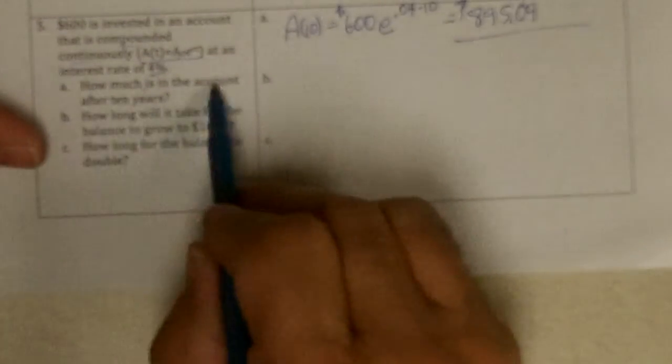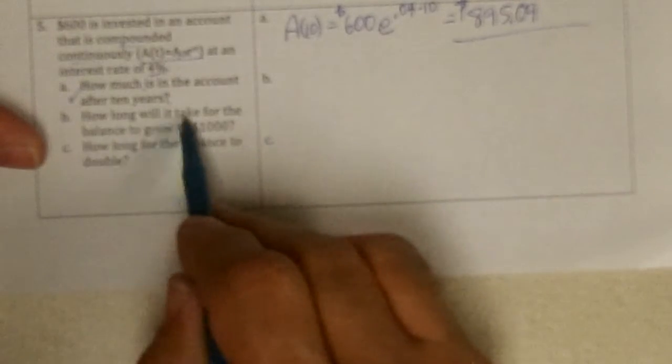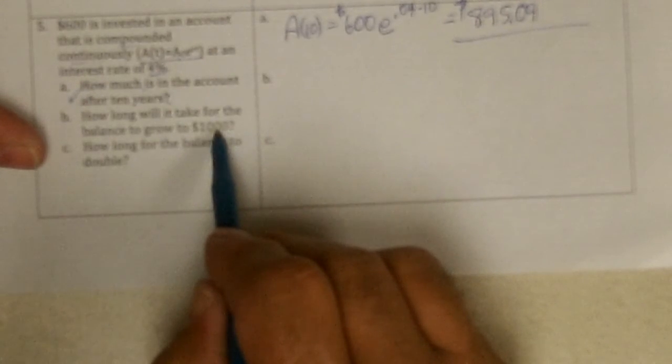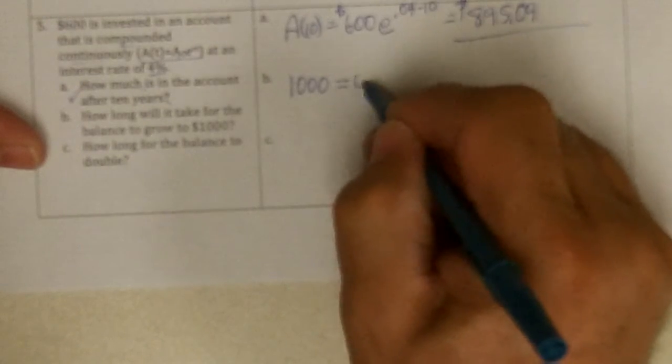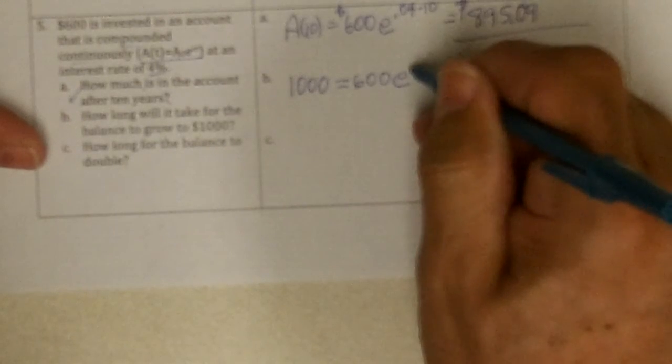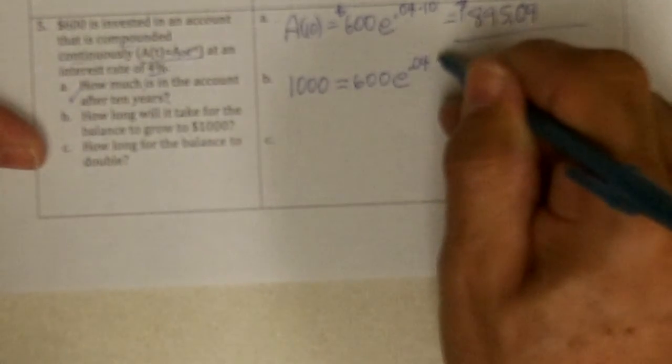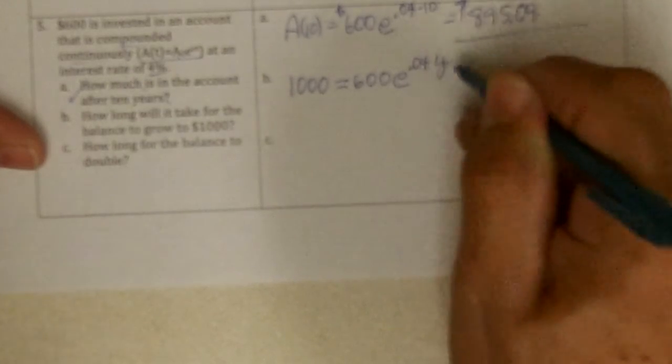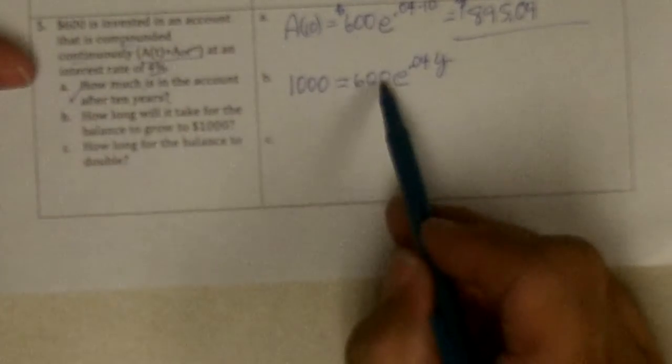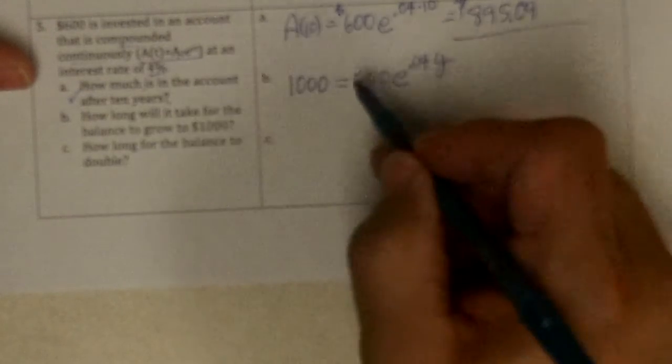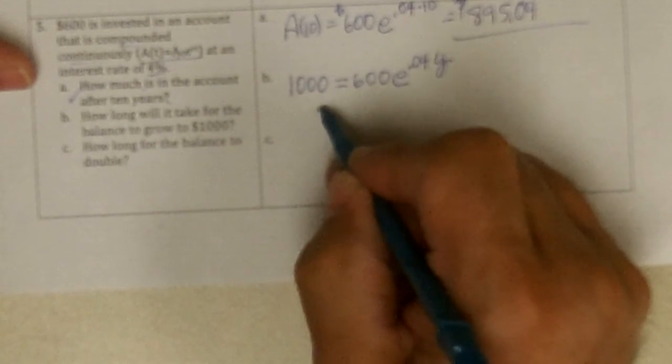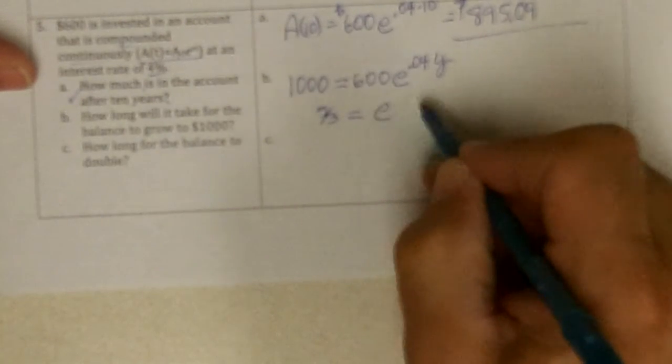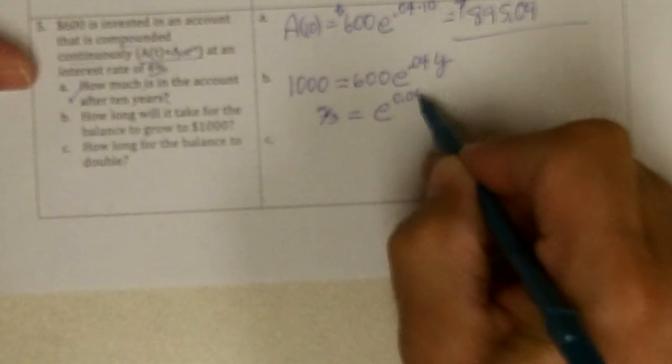Okay, how much is in the account after 10 years, did that? How long will it take for the account balance to go to $1,000? So now we're trying to solve, when will that be $1,000 if we start with $600, e to the, and the interest rate is 0.04, and how many years? Y or t, or whatever you want to put there. So divide by the 0.04 first, and that gives me 10, 10, 6, or 5 thirds, equals e to the 0.04y.